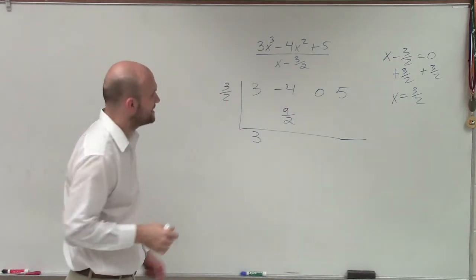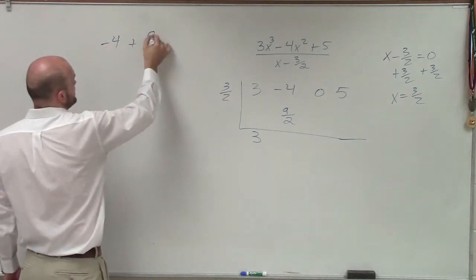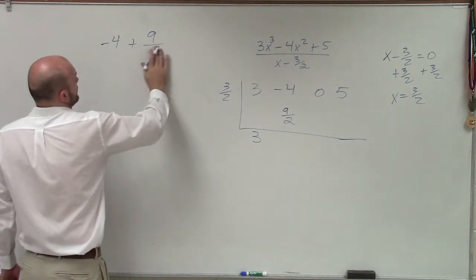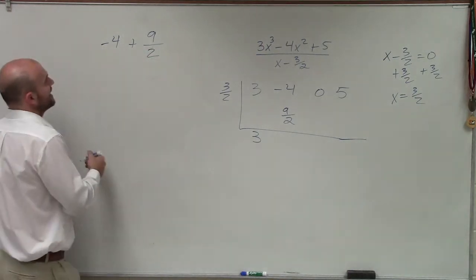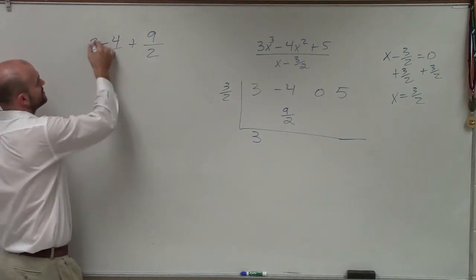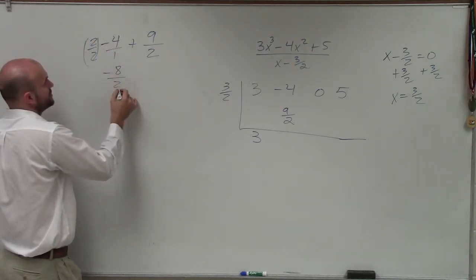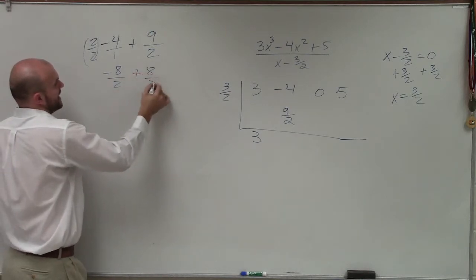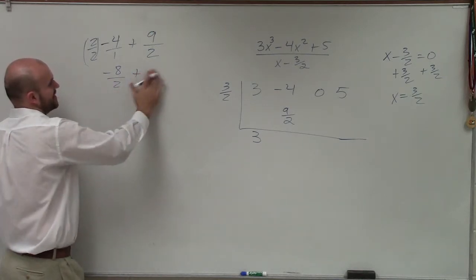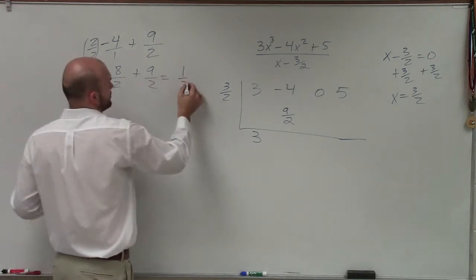Now if I'm going to multiply -4, let's just do a little work so you guys can make sure you remember how to do fractions. Okay, so -4 + 9/2. Well, I need to make sure I put this over and then I need to make sure they have the same denominators. So that's really going to be -8/2 + 9/2, which is going to be equal to 1/2.